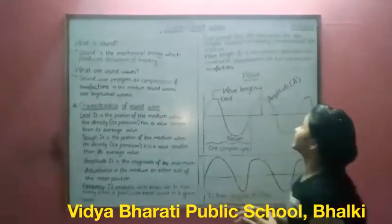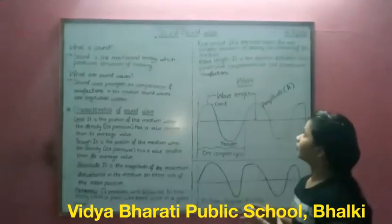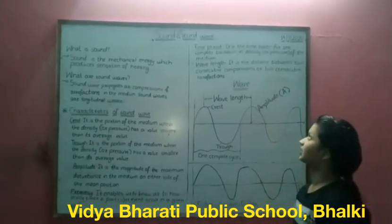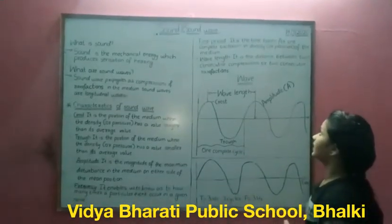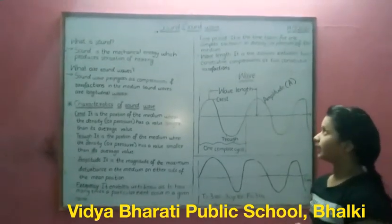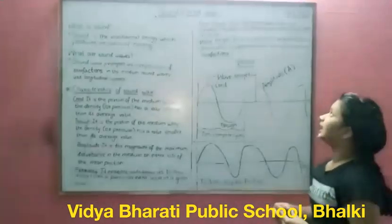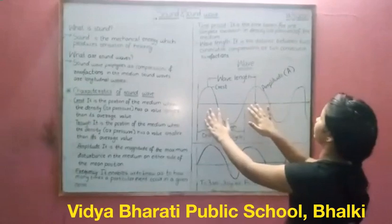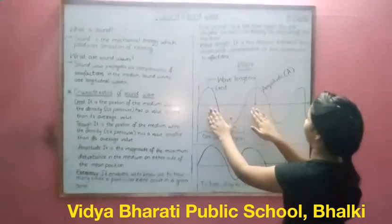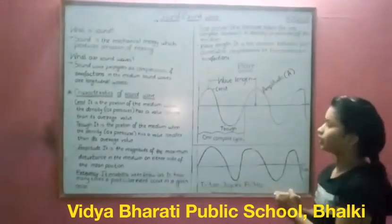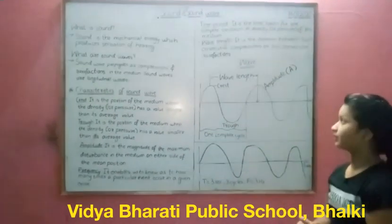Time period: it is the time taken for one complete oscillation in the density of the medium. Wavelength: it is the distance between two consecutive compressions or two consecutive rarefactions.